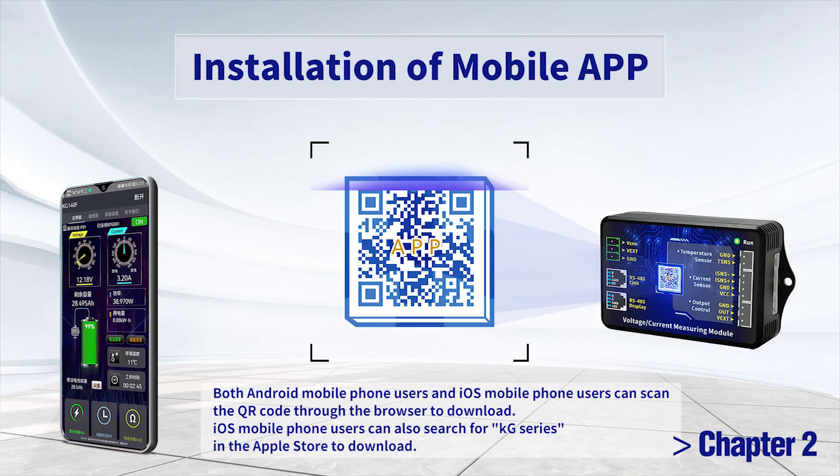Chapter 2. Installation of mobile app. Both Android mobile phone users and iOS mobile phone users can scan the QR code through the browser to download. iOS mobile phone users can also search for Kilogram series in the Apple Store to download.